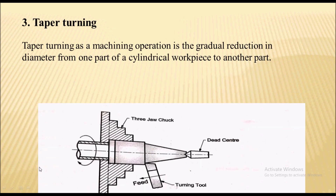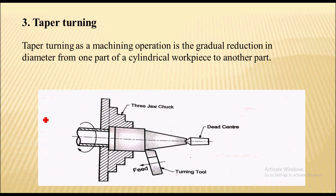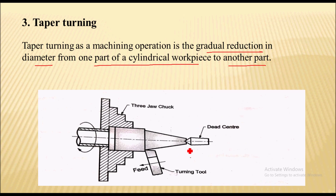The next operation is taper turning, which is again a type of turning operation. Taper turning is the machining operation involving a gradual reduction in diameter from one part of a cylindrical workpiece to another. Here you can see the workpiece diameter gradually reduces from one part to another. In this operation, the cutting tool moves at some angle to the axis of the workpiece.